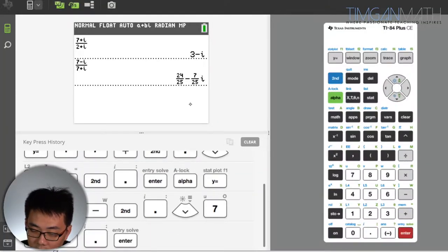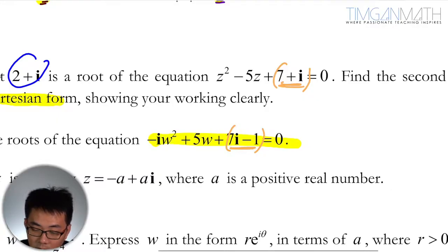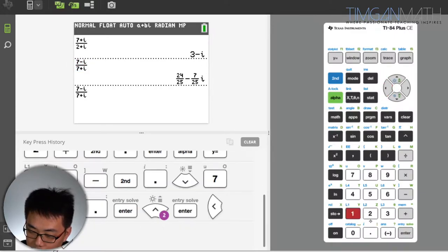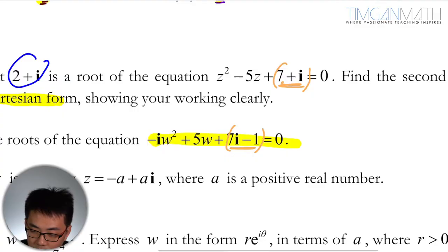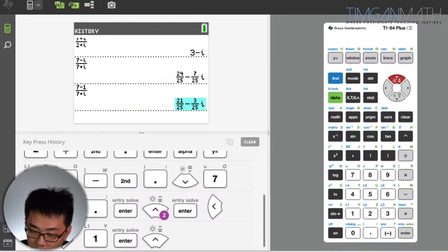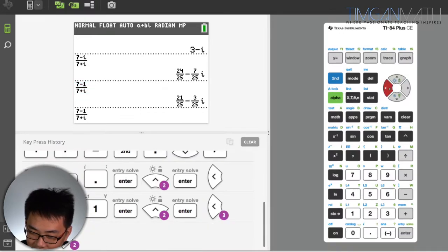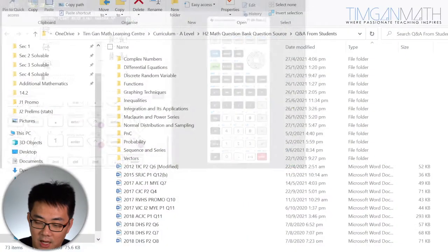It's actually, oh is it 7 minus i? Sorry, 7 minus 1. 7 plus 7, 7i minus 1, divided by 7 plus i. Okay great, so this is what, so you realize it's just i.